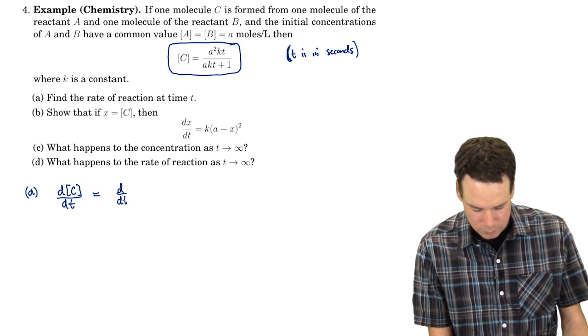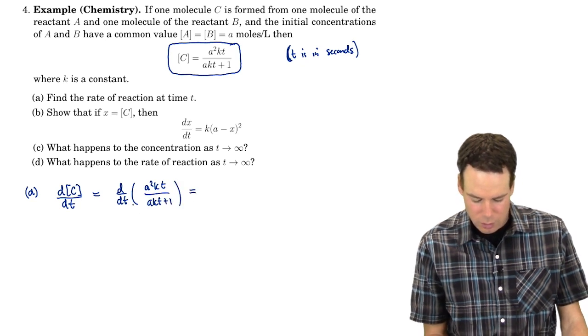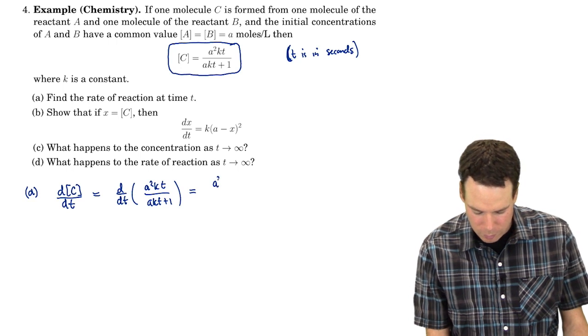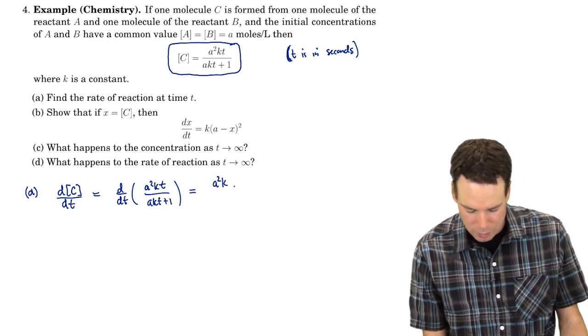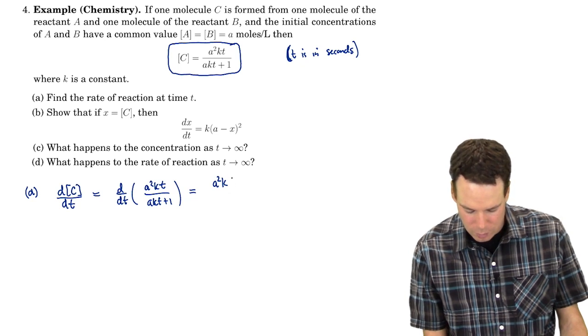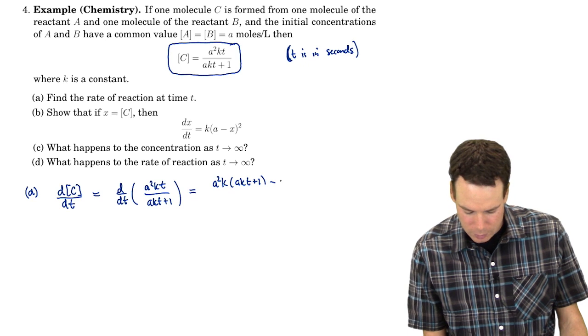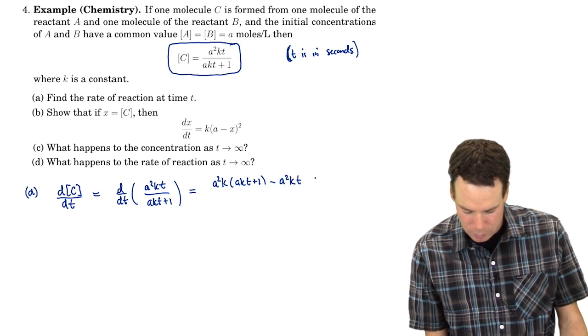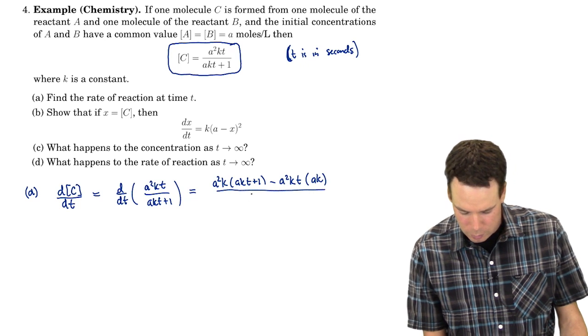So we're going to differentiate through. And in order to do this, we need to use the quotient rule. So it's the derivative of the top. Again, the variable we're differentiating with respect to is T. Everything else we're thinking of as constant. So the derivative of the top times the bottom minus the top times the derivative of the bottom all over the bottom squared.